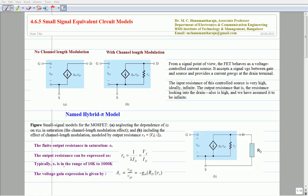Typically, the value of R-naught is in the range of 10k to 1000k. If we replace the small signal model for the common source amplifier, the circuit looks like this.